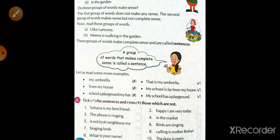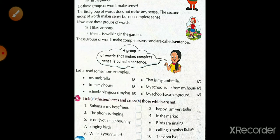Let us read some more examples. Now, we have some examples. First of all, we read, then I explain it. My umbrella. From my house. School. A playground. My house. Now look here.